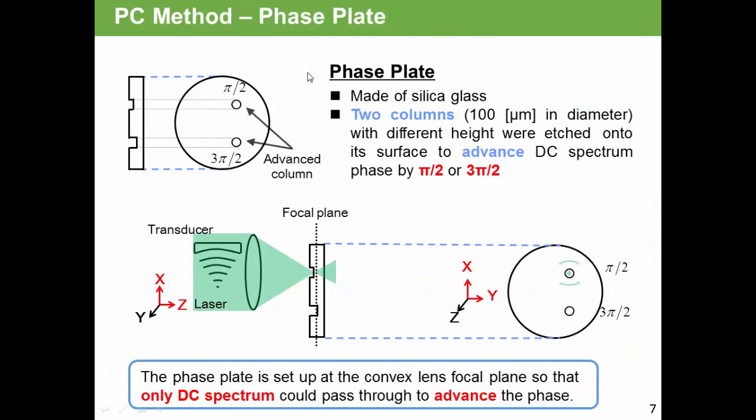Let me explain the phase plate used in PC method. Phase plate was made of thicker glass. Two small columns with different height were etched onto its surface to advance DC spectrum phase by π over 2 or 3π over 2. So, the phase plate is set up at the convex lens focal plane, so that only DC spectrum could pass through to advance the phase.